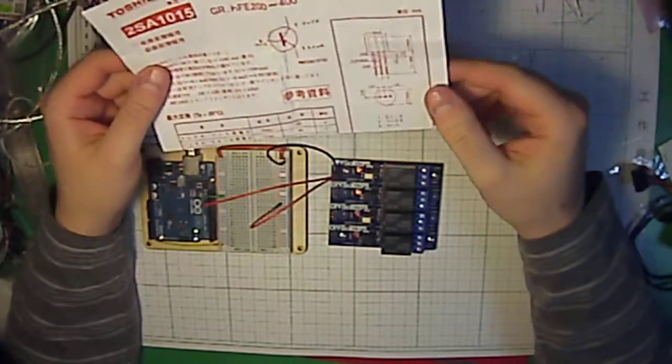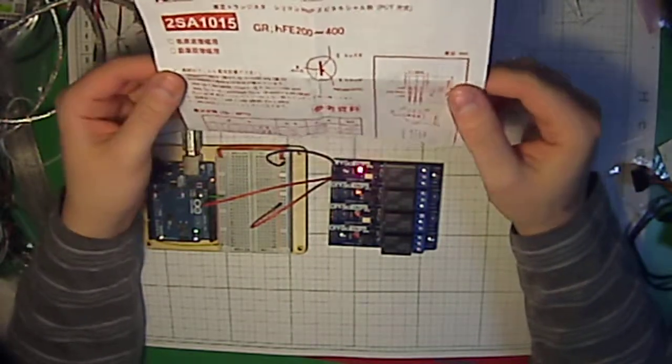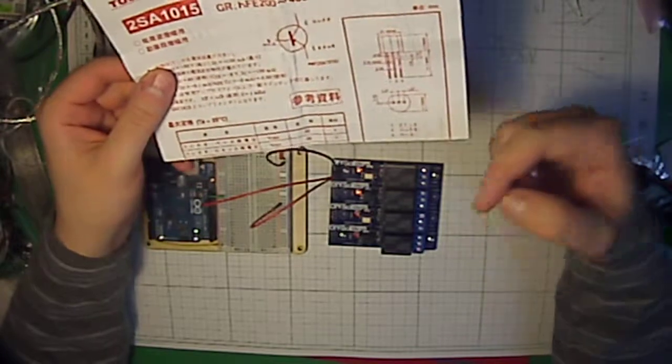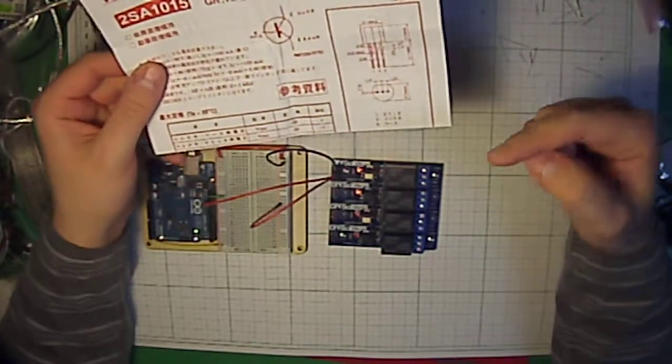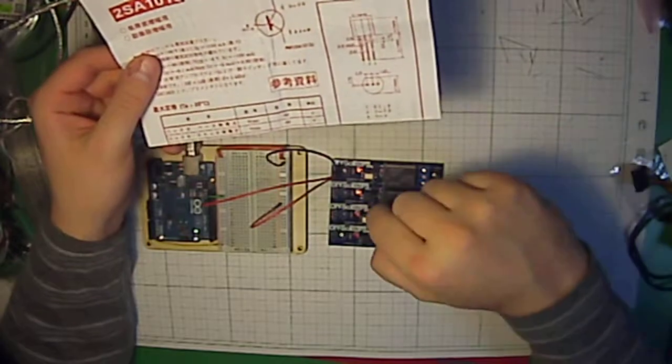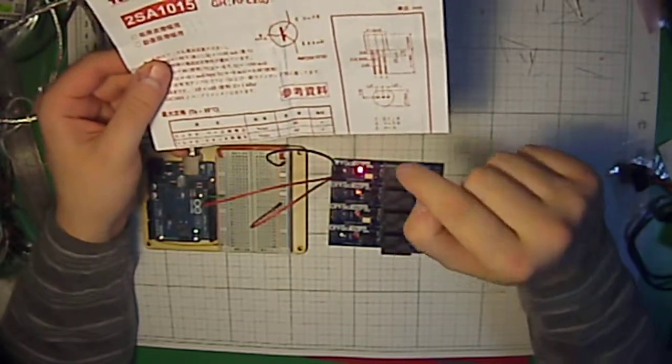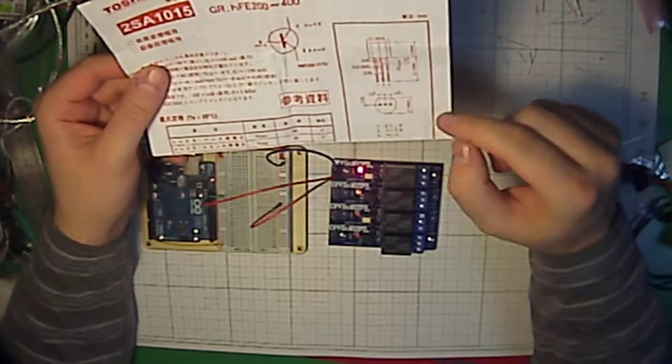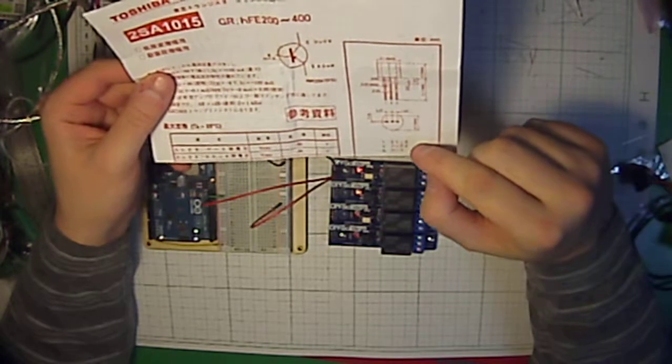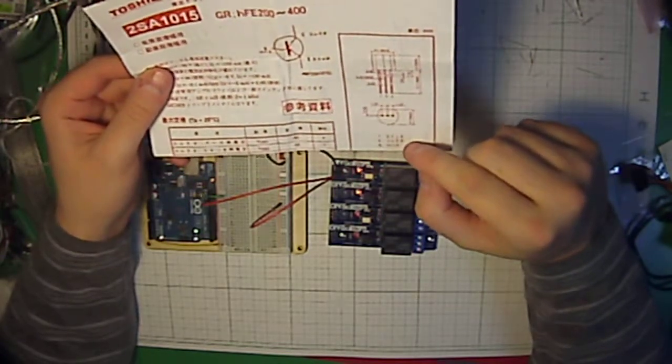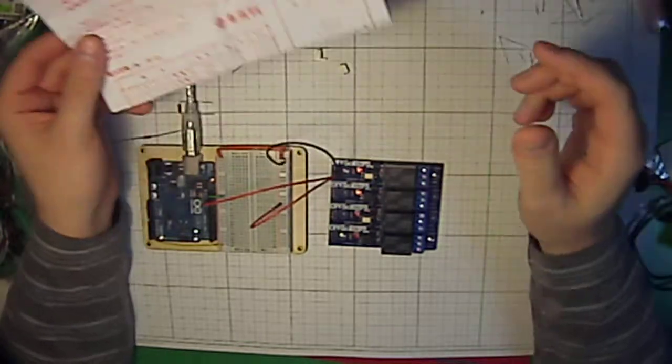But this transistor is kind of an oddball Toshiba part number. It's a PNP transistor, part TSA1015. And the reason why it's a little bit oddball is the pin order is a little bit different than most PNP transistors. So if you need to replace this for any reason, please be sure to check the datasheet and make sure you get a transistor with the right pin order. So on this transistor, pin 1 is the emitter, pin 2 is our collector, and pin 3 is the base. So it's a little bit out of order. So that's that.